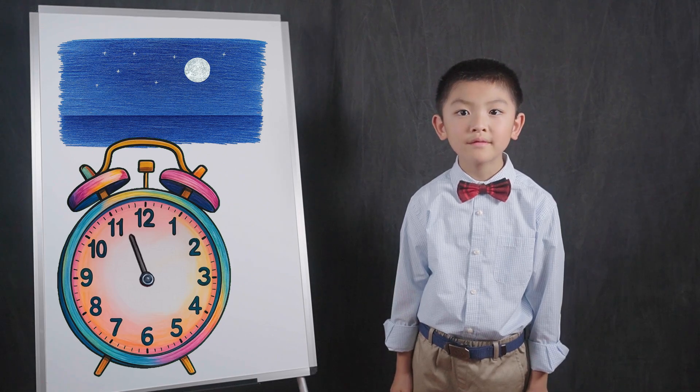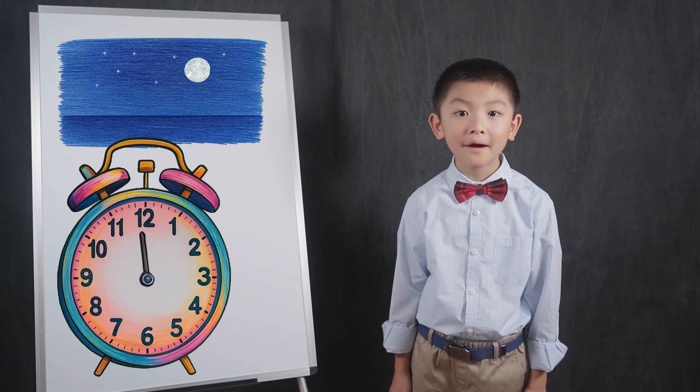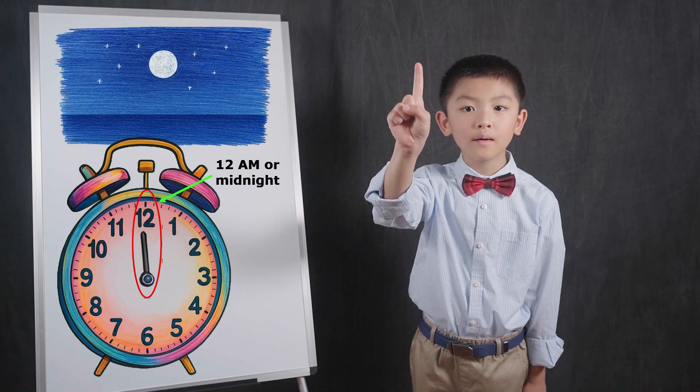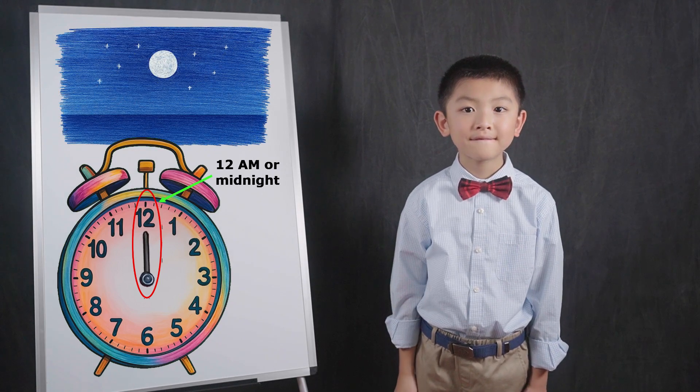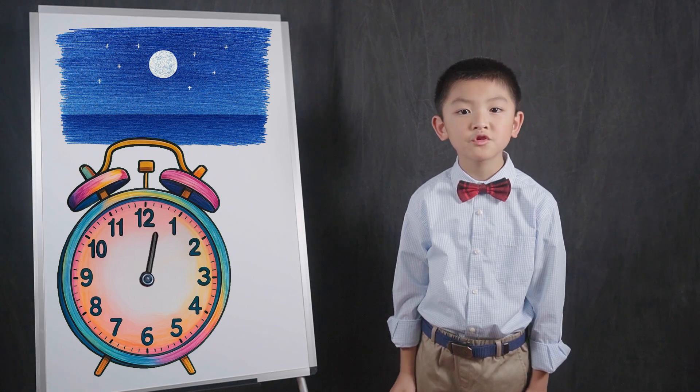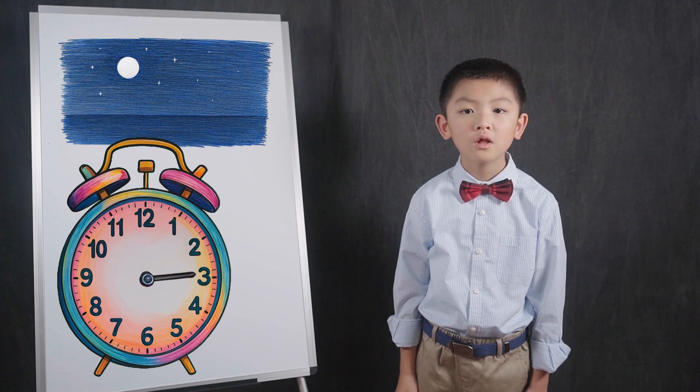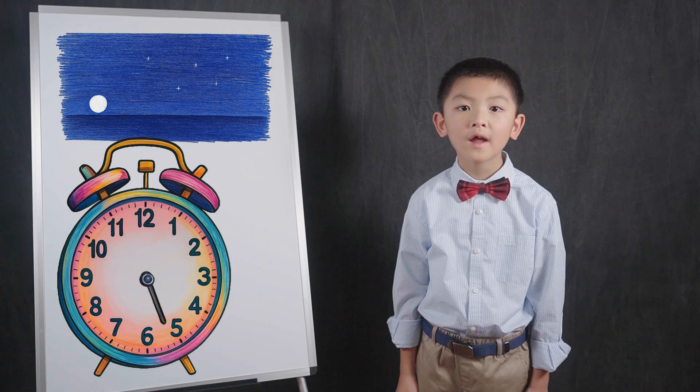On a clock with 12 numbers, the day starts with the hour hand pointing up at 12 AM, which is also called midnight. The first time the hour hand travels around the clock, we will call before midday, or AM.